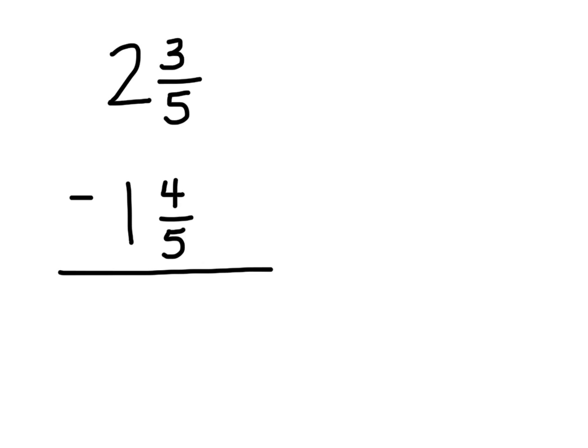Okay, here we have another fraction subtraction problem. 2 and 3 fifths minus 1 and 4 fifths. So once again we are fortunate that we have two fractions that have a common denominator. They both have fifths, but what I'm also noticing is that even though this number 2 and 3 fifths, even though it has a 2 and that means that the top number is definitely larger than 1 and 4 fifths,